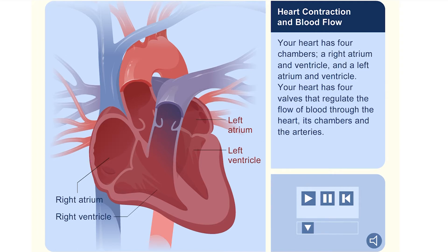Your heart has four valves that regulate the flow of blood through the heart, its chambers, and the arteries.